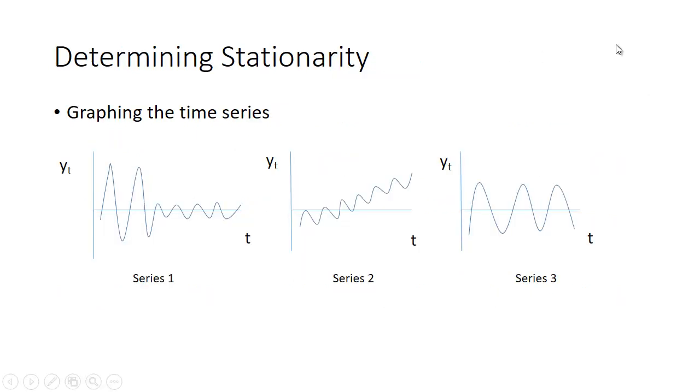So how do we identify this? Well, one way is to look at graphs. If we graph the time series, if you look at Series 1 right here, what do you notice? You notice it seems to have a constant mean, it's fluctuating around that same point, but it seems to have a non-constant variance.